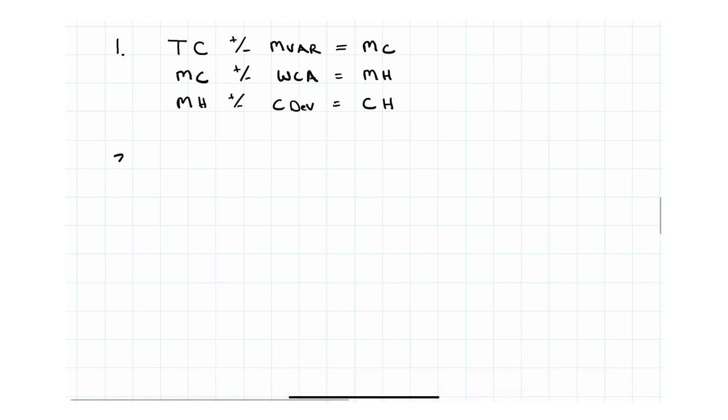Now the FAA teaches us a different method. Either method will get you there. The FAA teaches true course plus or minus wind correction angle equals true heading. And then they teach us true heading plus or minus magnetic variation is equal to mag heading. And then mag heading plus or minus compass deviation equals compass heading.